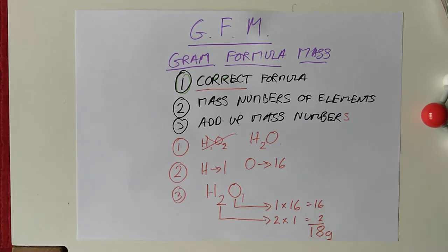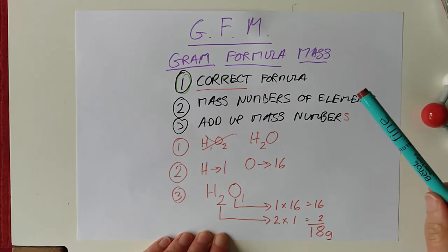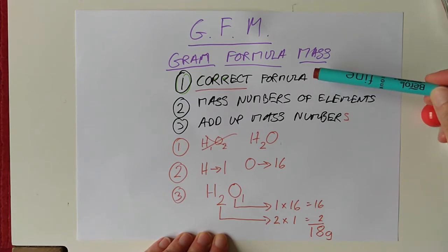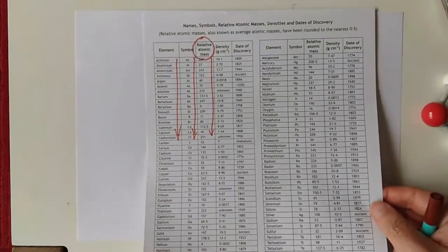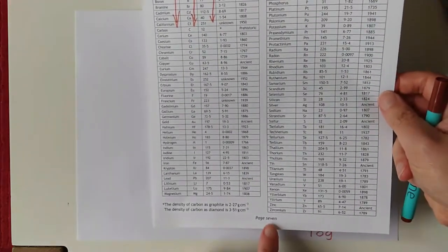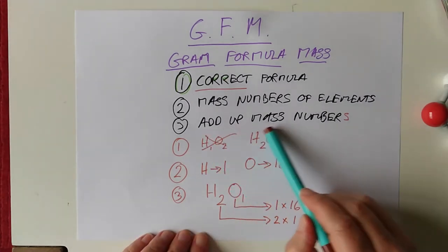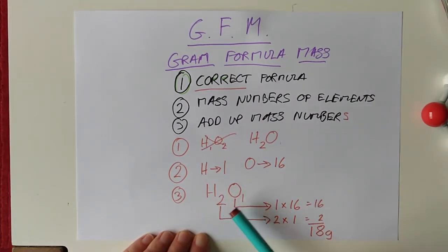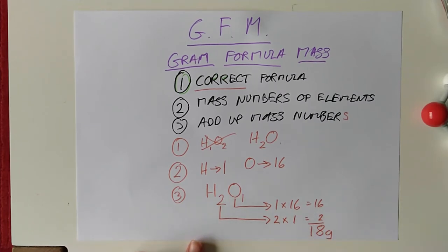How does that look? Doesn't look too difficult, does it? So, quick recap on that, guys. Gram formula mass, GFM, I haven't told you what it is yet. But here's how to work it out. First of all, you need the correct formula. You need the mass numbers of the elements, which we get from the least readable page in the universe ever in your data book. And we need to add these mass numbers up. But you do need to remember that the formula will change the number. I'm just going to pause the camera and get a fresh sheet of paper and we'll try one more as an example.